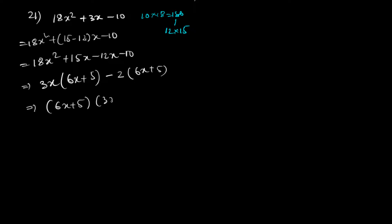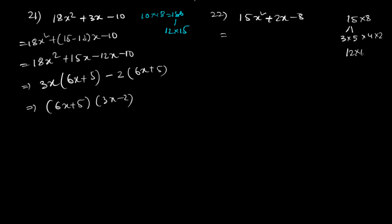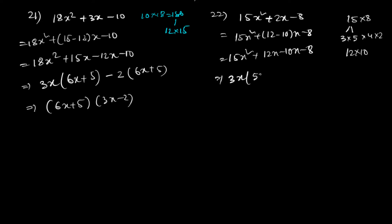The 22nd question: 15x² + 2x - 8. So 15 times 8 is 120, and from 120 I need to get 2, using factors 12 and 10. So 15x² + 12x - 10x - 8. Taking 3x common gives 3x(5x + 4), taking -2 common gives -2(5x + 4). The answer is (5x + 4)(3x - 2).